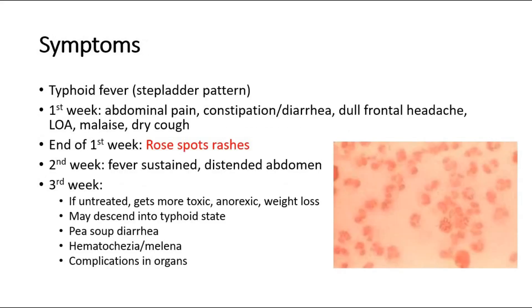The symptoms of typhoid fever — as the name suggests — include typhoid fever with a characteristic step-ladder pattern, described as the fever rising through each day with progressive peaks, getting higher and higher. In the first week, the patient might have abdominal pain, GI symptoms such as constipation or diarrhea, dull frontal headache, loss of appetite, malaise, and dry cough. At the end of the first week, they might develop rose spot rashes.